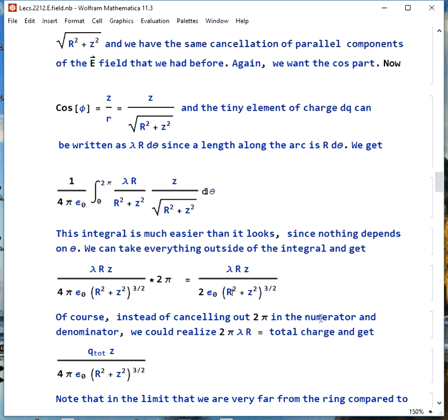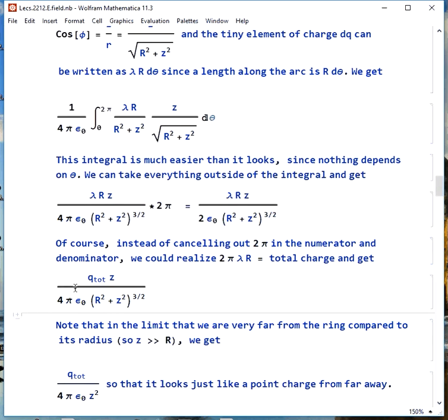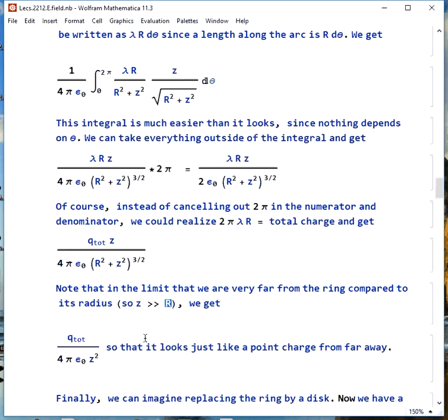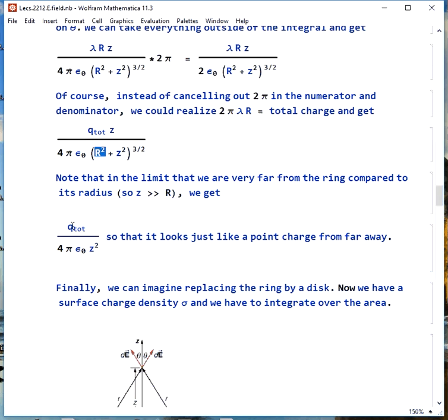What we could do instead of cancel out that 2π in the numerator and the denominator, we could use 2π lambda r as the total charge, and we could write q z is 4π epsilon naught times r squared plus z squared to the 3 halves. If we go to the limit where we're very far away from the ring compared to its radius, that means z is much, much greater than big R, this part goes away, and we get total charge over 4π epsilon naught z squared. Notice this is exactly what a point charge would look like. So if we're very far away from the ring, we can't tell it from a point, as long as we're oriented like this.